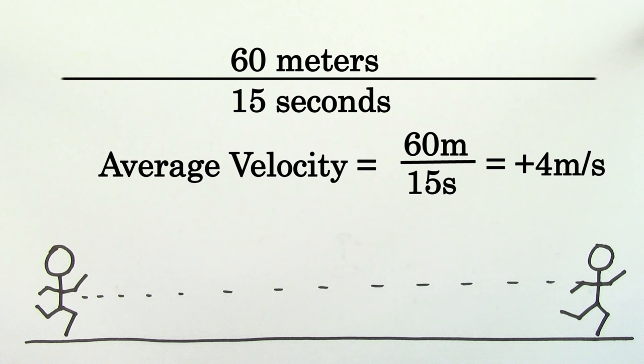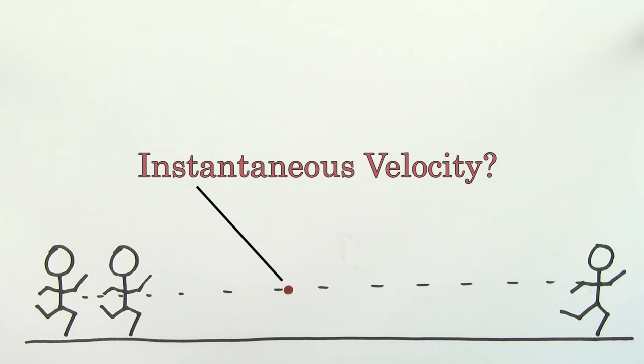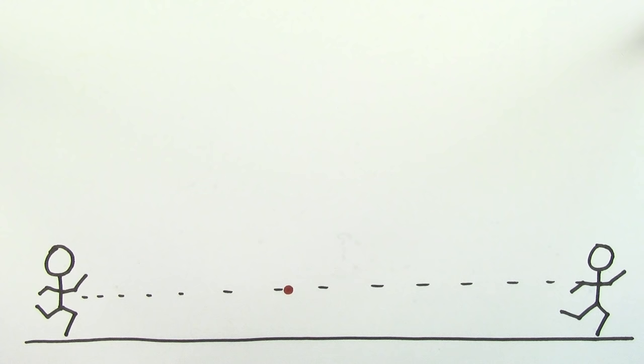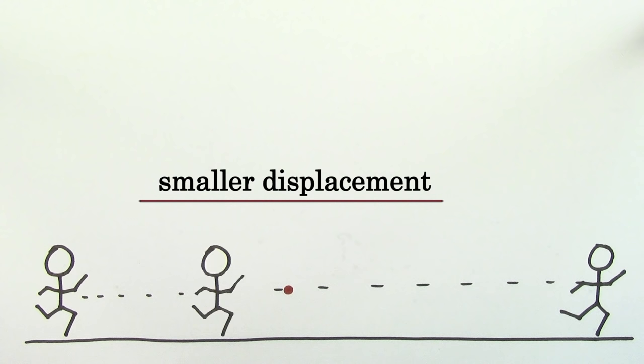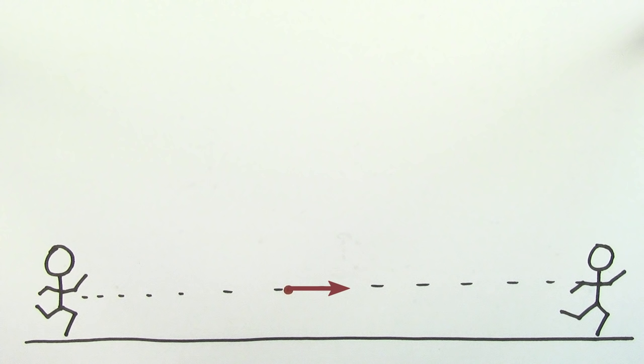Say you wanted to know the instantaneous velocity at a particular point in time during this trip. In that case, you'd want to find a smaller displacement over a shorter time interval that's centered at that point where you're trying to find the instantaneous velocity. This would give you a better value for the instantaneous velocity, but it still wouldn't be perfect.